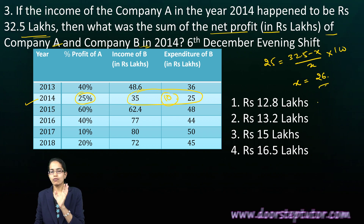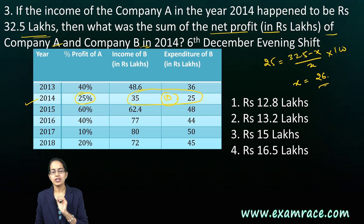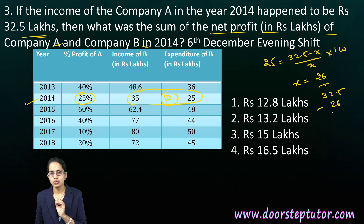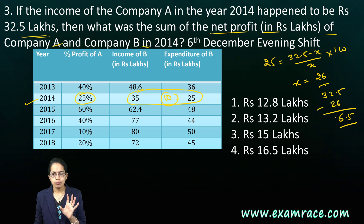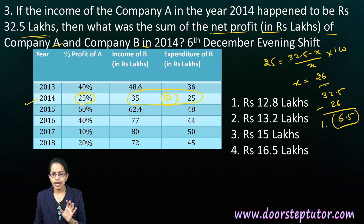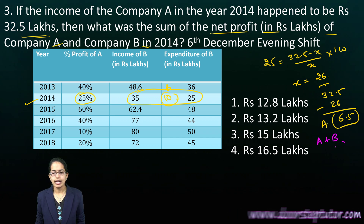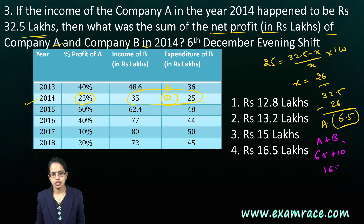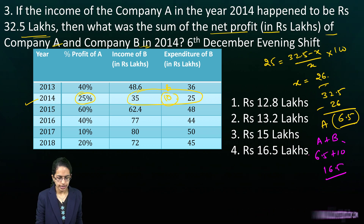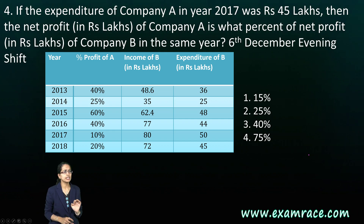The expenditure for company A comes out to around 26 lakhs. So the profit for company A is 32.5 minus 26, which gives 6.5 lakhs. Profit for A is 6.5 and for B is 10. Adding A plus B gives 6.5 plus 10, which is 16.5 lakhs — that is the right answer.